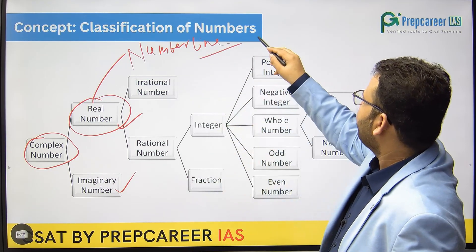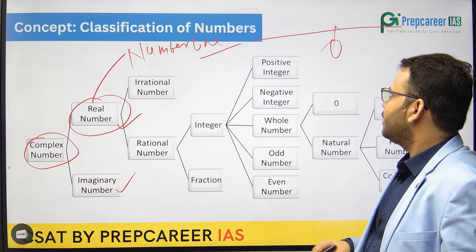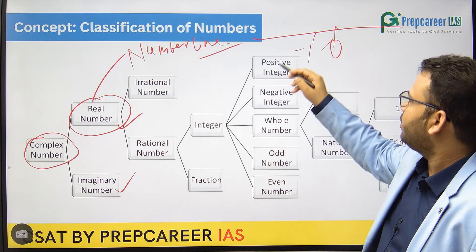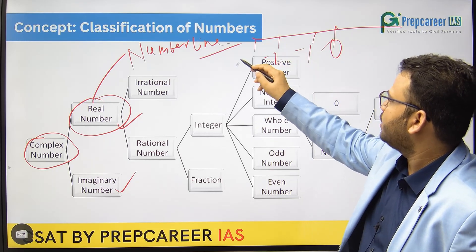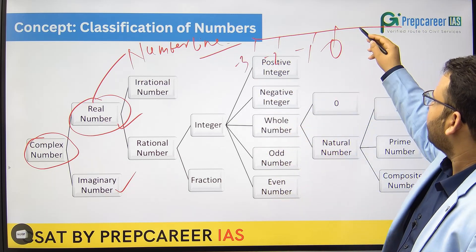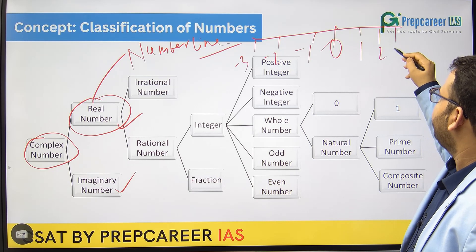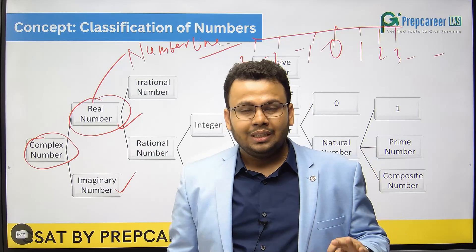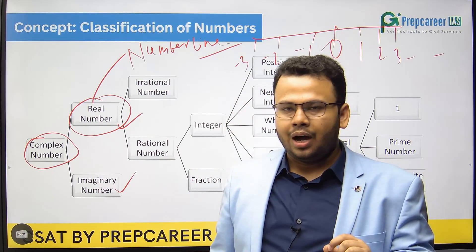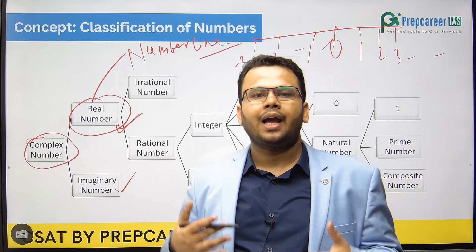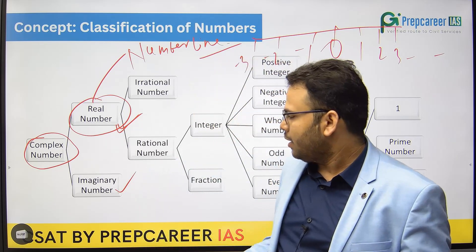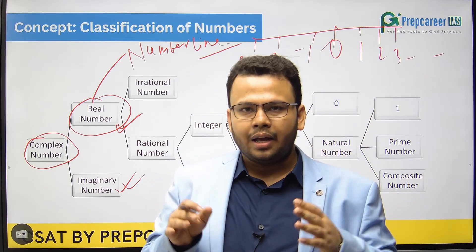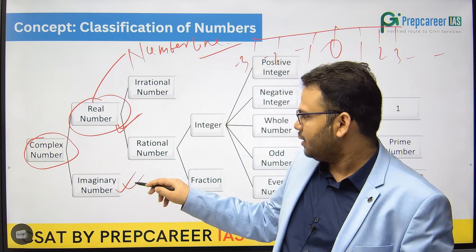Now, what is a number line? It starts with 0. If you go towards the left, you will find minus 1, minus 2, minus 3, and so on. If you go towards the right side, you will find numbers like 1, 2, 3, 4, etc. This is what we call the number line. So all numbers that can be represented on the number line are called real numbers, and those that cannot are called imaginary numbers — imaginary numbers are not important from an exam point of view, so I will not discuss that concept.